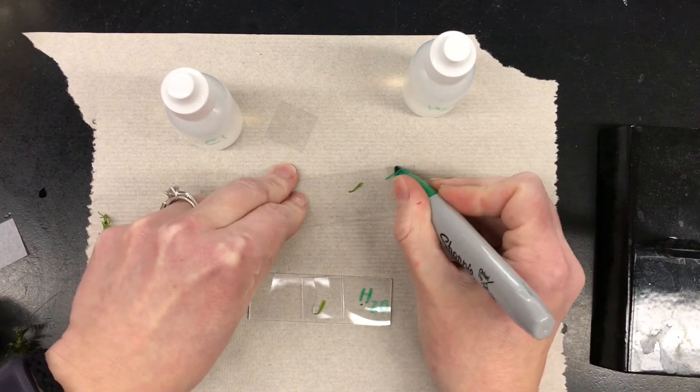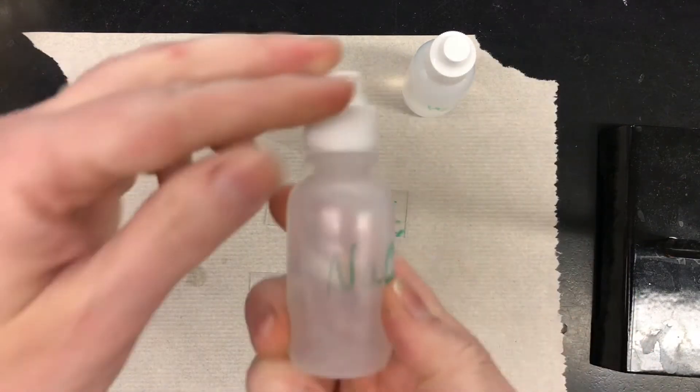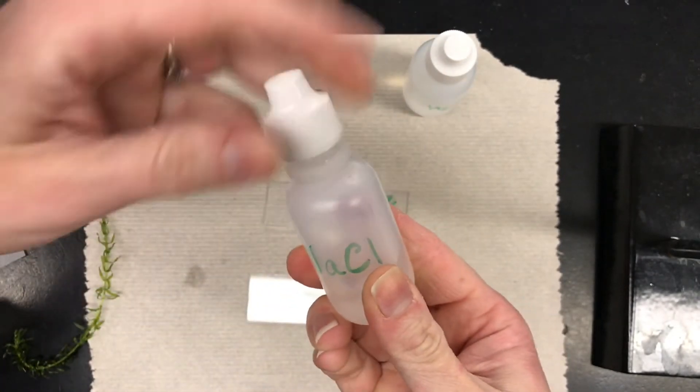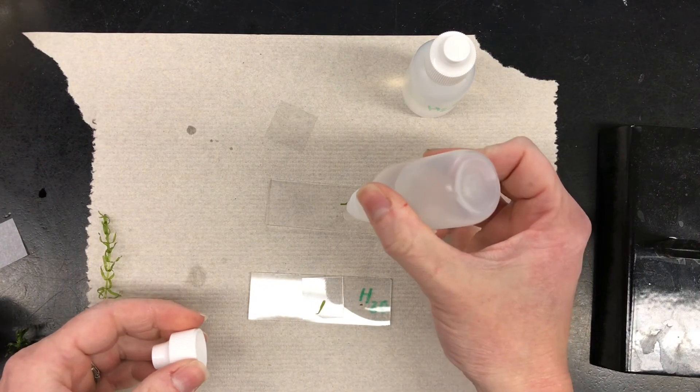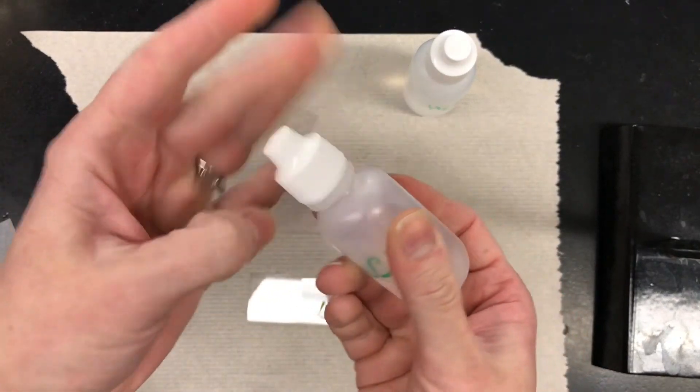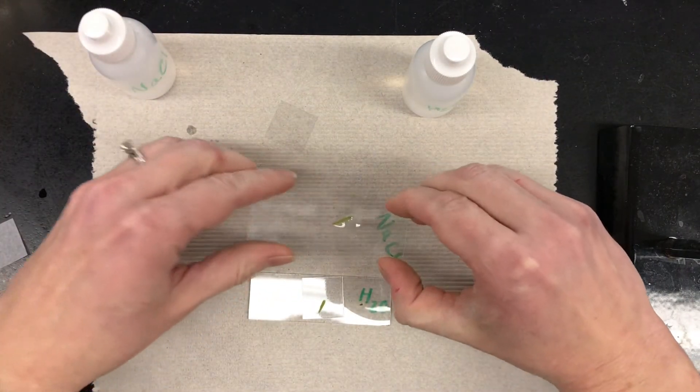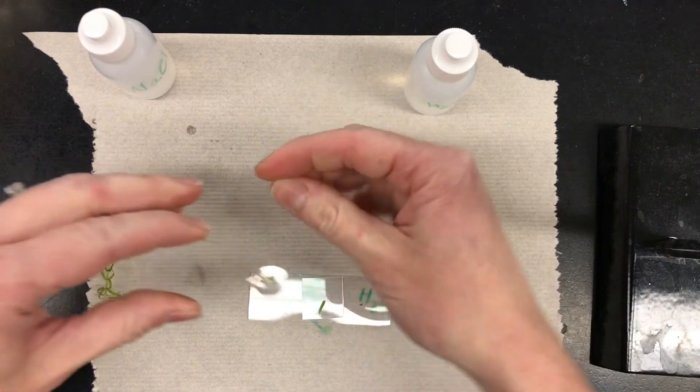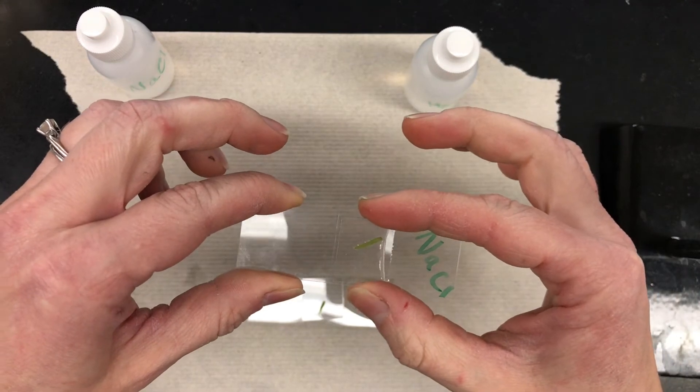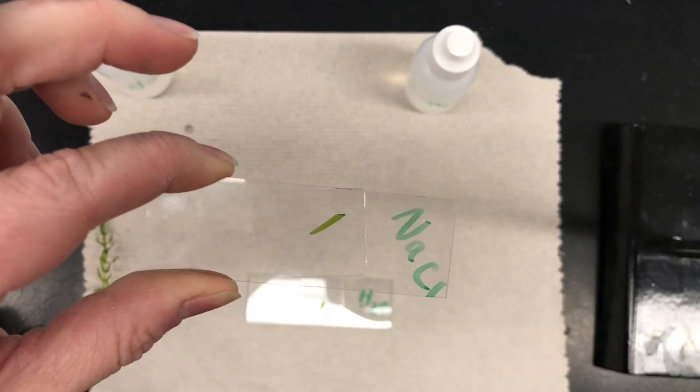The next one will be our salt slide. Take the dropper bottle that says NaCl, put one drop right on top of your Elodea. Put the cap back on your NaCl. Pick up your cover slip, hold it at a 45 degree angle, lower it down, and there we go.